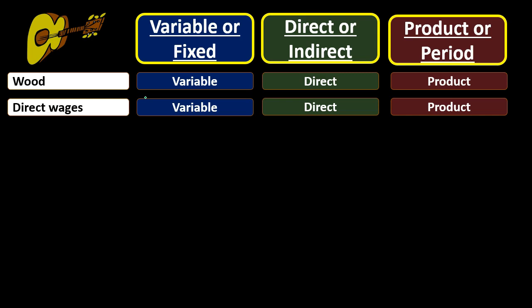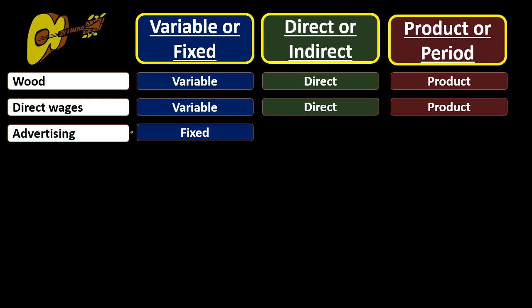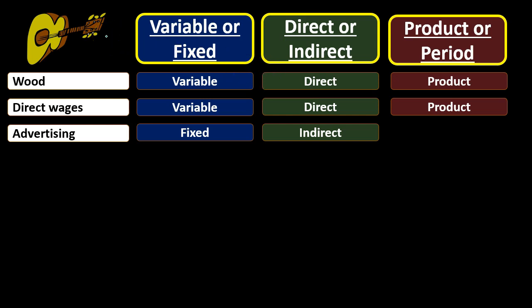Similarly with utilities — it's not utilities expense that we debit but rather some type of asset for inventory, which feels unusual if you've memorized that utilities always means a debit to utilities expense and a credit to cash. These take some adjustment to unlearn. Advertising is typically going to be fixed. It's going to be indirect, because advertising isn't dealing with production — we can't assign it directly to a particular guitar.